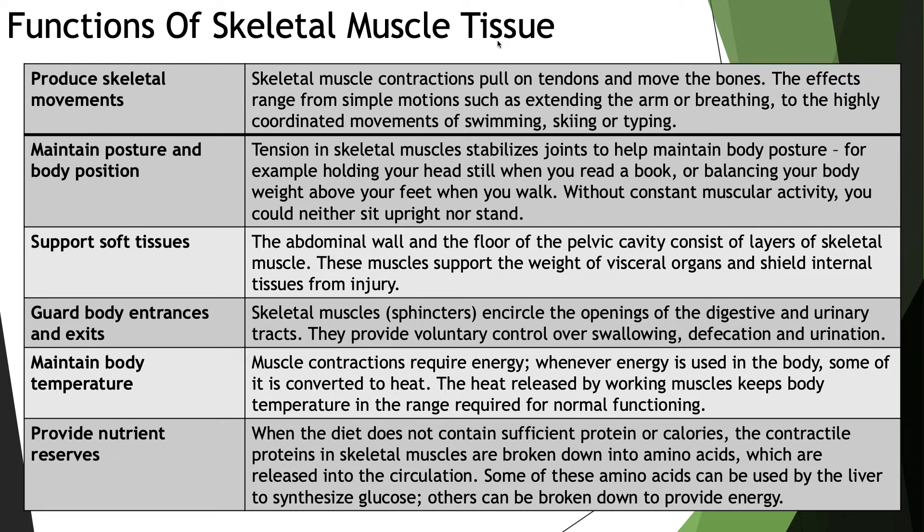Lastly, skeletal muscles provide nutrient reserves. When the diet contains inadequate protein or calories, the contractile proteins in skeletal muscle are broken down into amino acids, which are then released into circulation. Some of these amino acids can be used by the liver to synthesize glucose, and others can be broken down to provide energy.